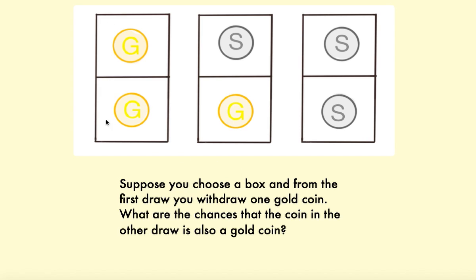Because if you picked this gold coin in the first box, this one here, then you've got a gold coin there. But if you picked this gold coin, then you get a silver coin. So that's one out of two chance of getting a gold coin, so it's one half.